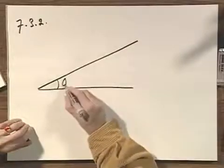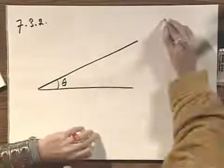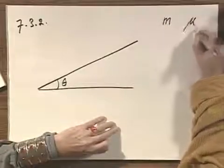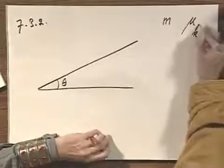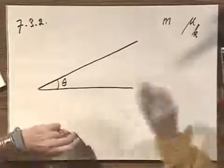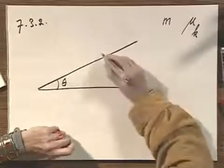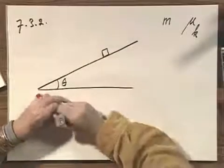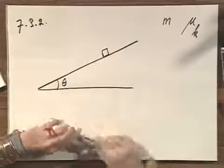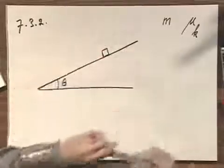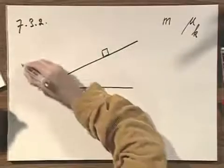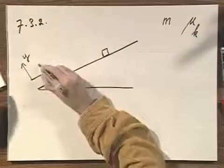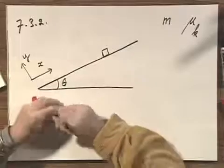The slope is at an angle theta. The mass that I'm pulling up is m. The kinetic friction coefficient, which is always a little less than the static friction coefficient, is mu k. And here is that object. The speed along this line is constant. Let's call this the direction y, perpendicular to the slope, and let's call this x, the direction along the slope.